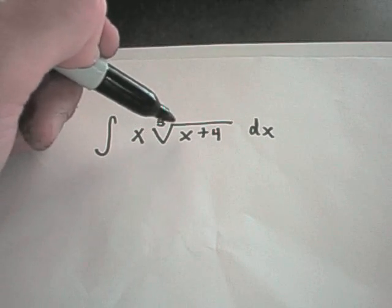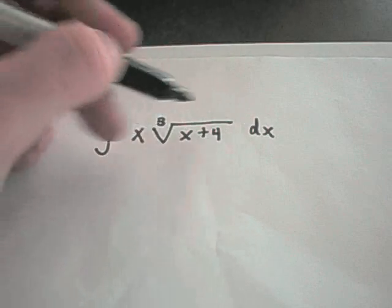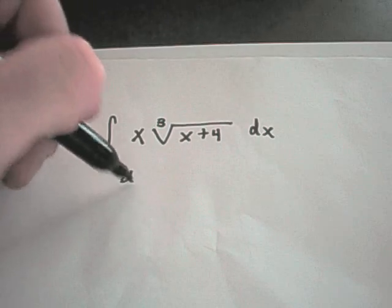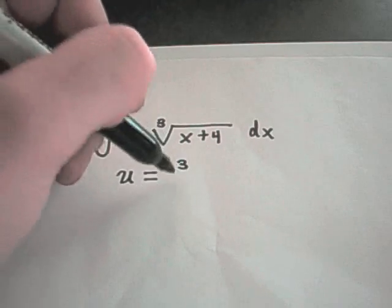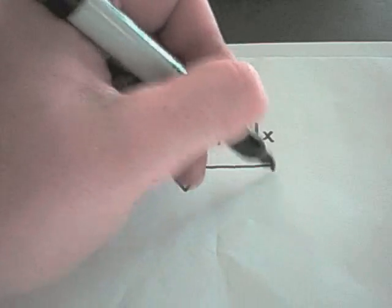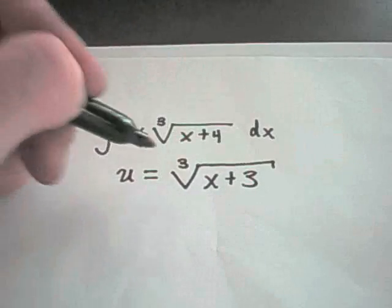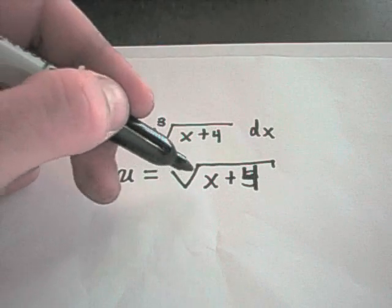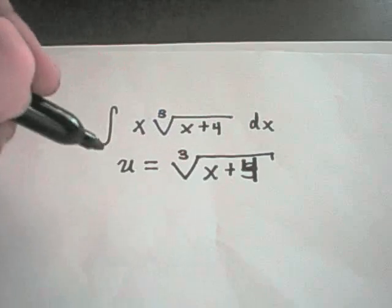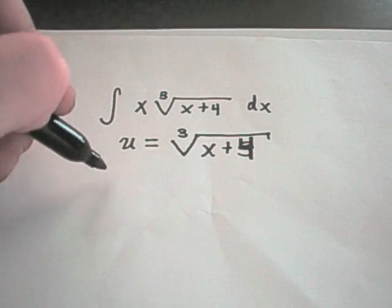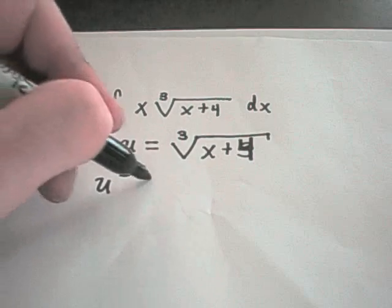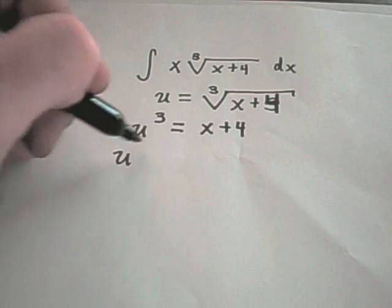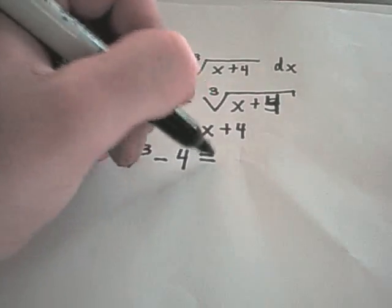So here I have x times the cube root of x plus 4. A lot of times, if you have radicals floating around, you know, one good thing to think is maybe trig substitution. But if it's not a square root, a lot of times you can get by doing a u substitution, and you make u equal to the entire radical. So u is going to equal the cube root of x plus 4. Well, again, to calculate my dx term, I'm going to have to kind of break this apart. I'll cube both sides, and I'll get u cubed equals x plus 4. I could even rewrite this as u cubed minus 4 equals x.